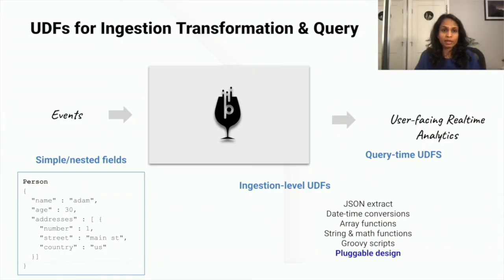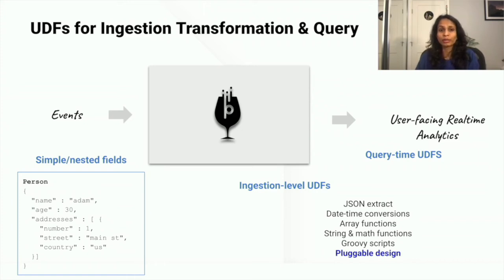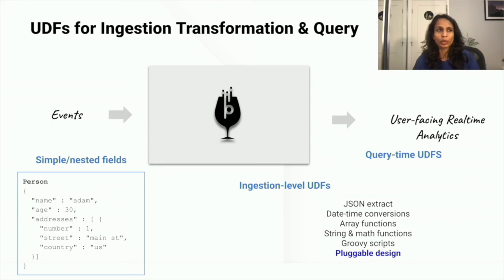Along with the UDFs from the demo, Pinot has a rich set of UDFs to transform and extract fields from unstructured data: datetime conversion functions, array functions, math and string operations. You can also write Groovy scripts in your UDFs for more custom and complex logic. The entire UDFs architecture is designed in a pluggable way, so you can easily write your own UDF and plug it into the Pinot cluster.